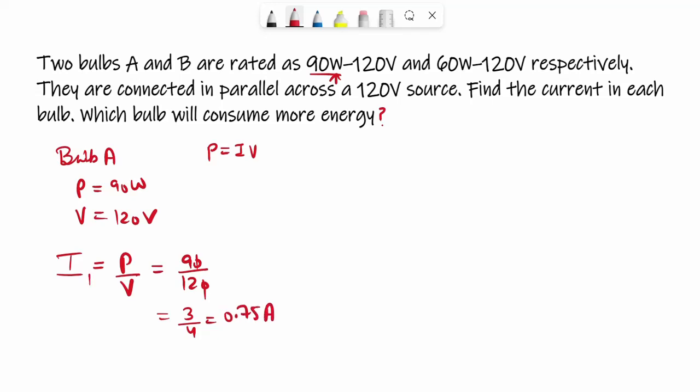Now in the next one, you can understand that P in bulb B is 60 watt and V is 120 volt. So I equals P over V, you get 60 over 120, which is 1 over 2, 0.5 ampere.